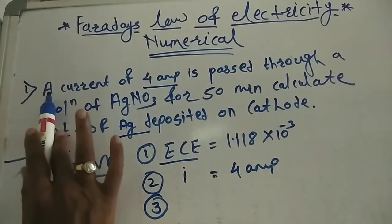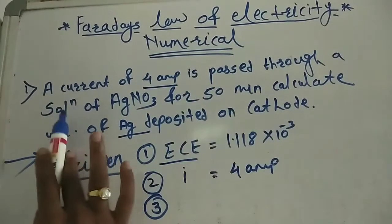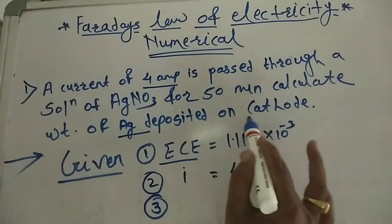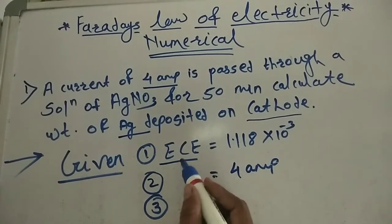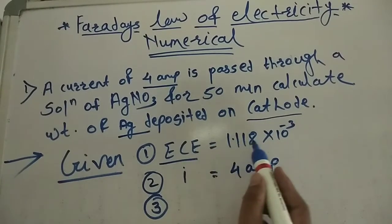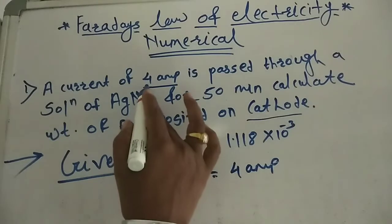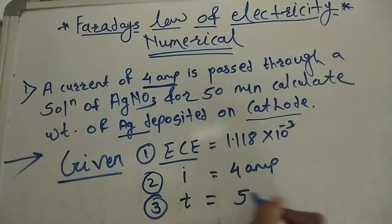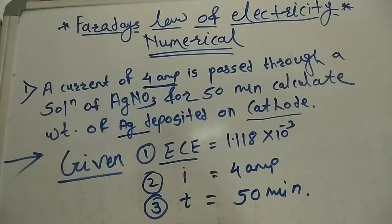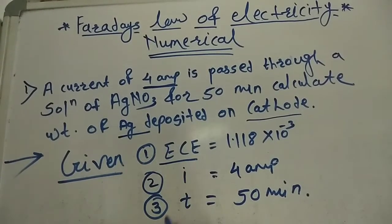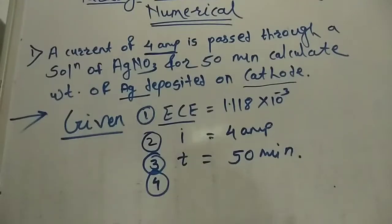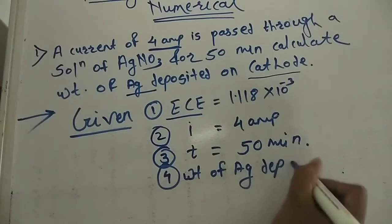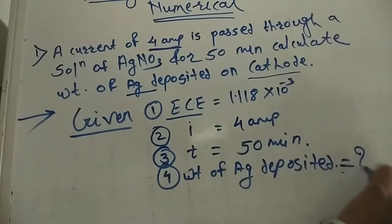We have a problem: a current of 4 ampere is passed through a solution of silver nitrate for about 50 minutes. Calculate the weight of the silver deposited on the cathode. The given electrochemical equivalence Z is 1.118 × 10⁻³.